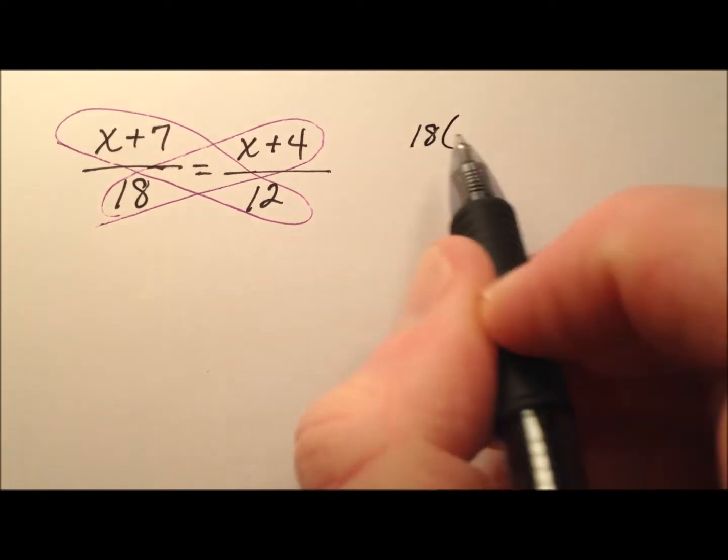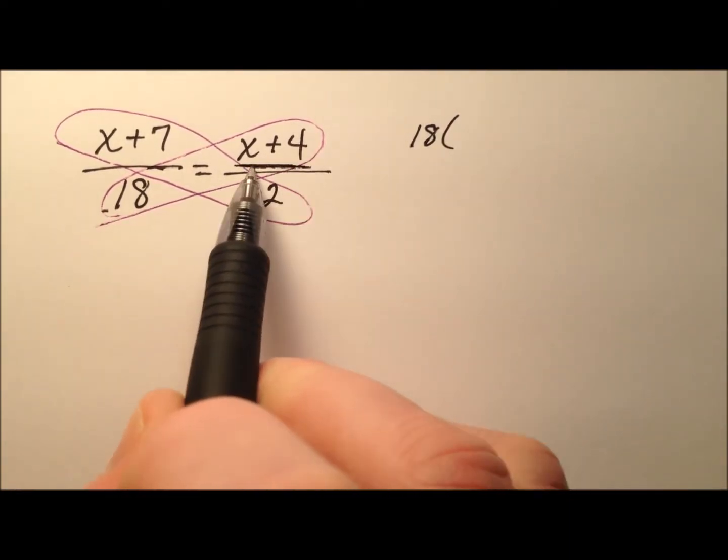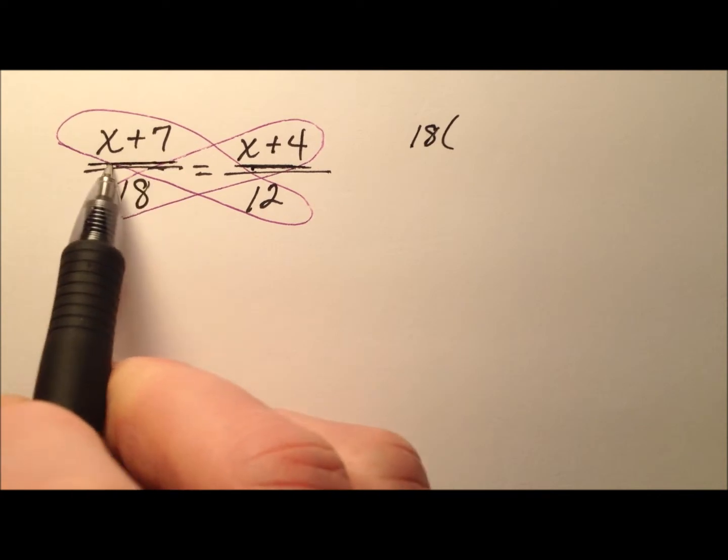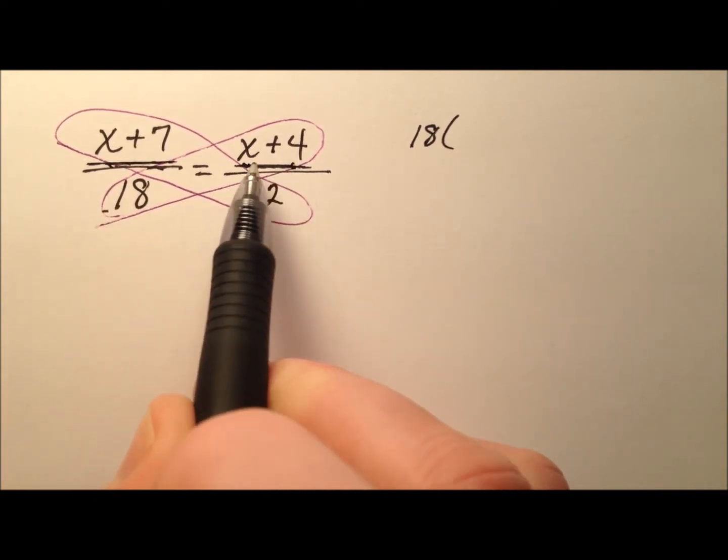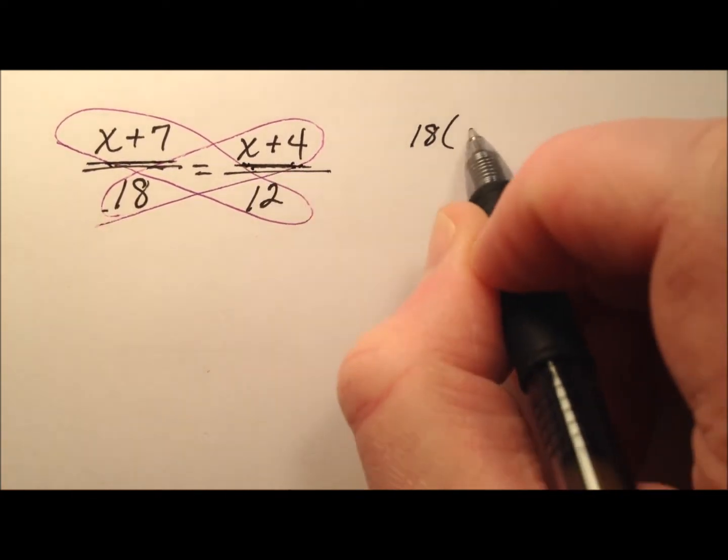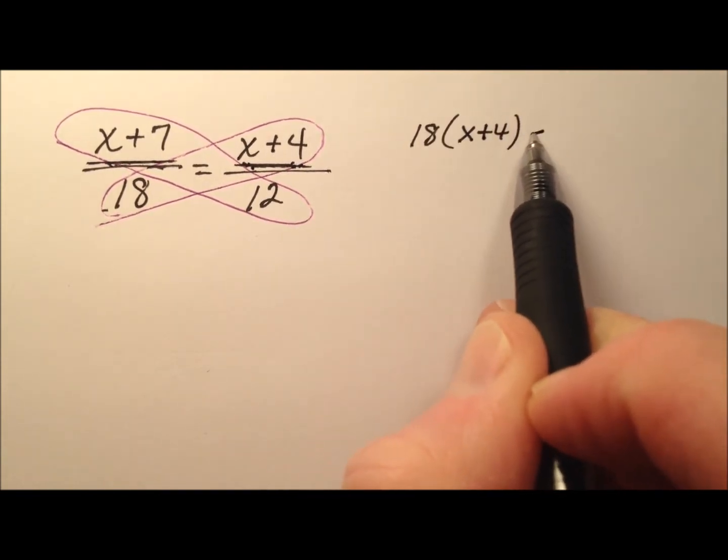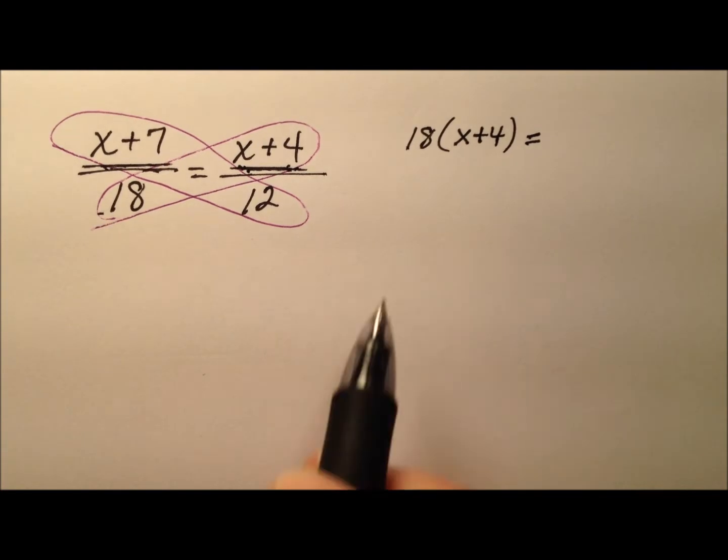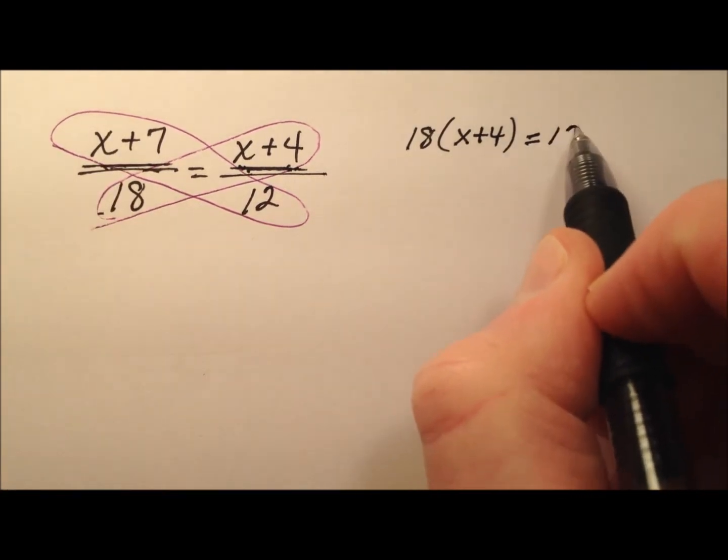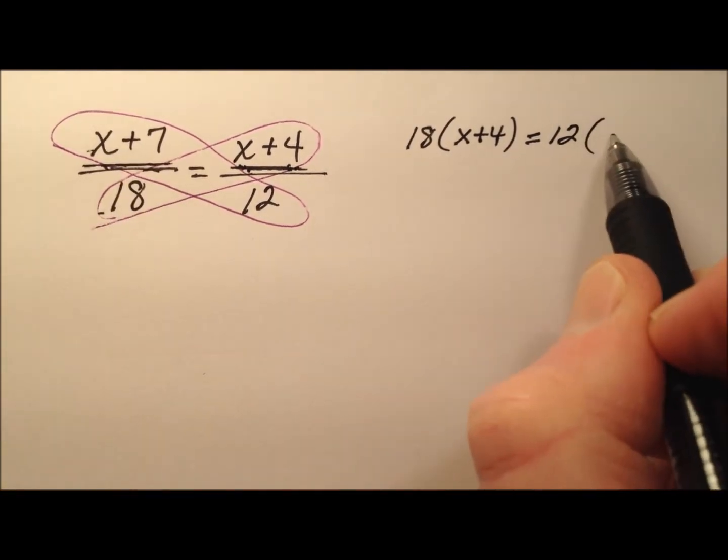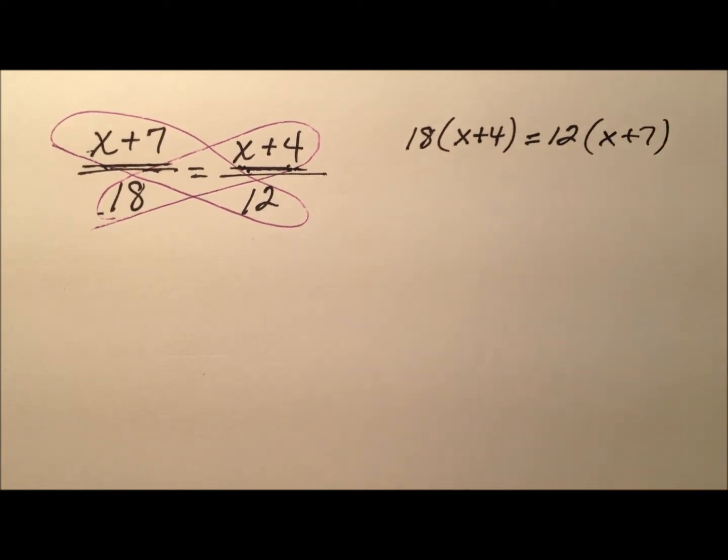So we have 18 times, well this x plus 4, just like the x plus 7, has two terms. So you need to be careful and you need to put those two terms in parentheses because ultimately you'll need to distribute that 18 across. So that'll equal, equals 12 times, same thing. Let's put that in parentheses as well.